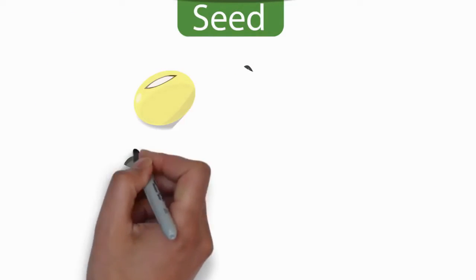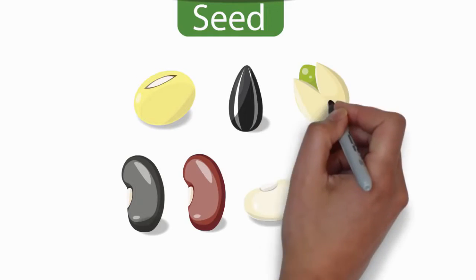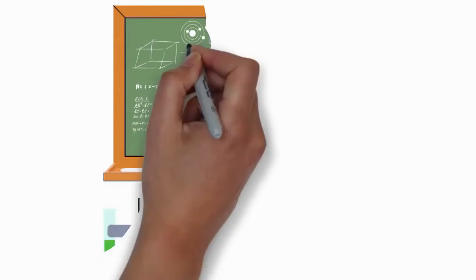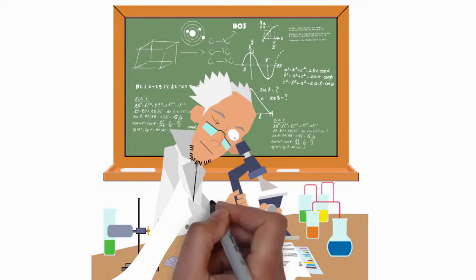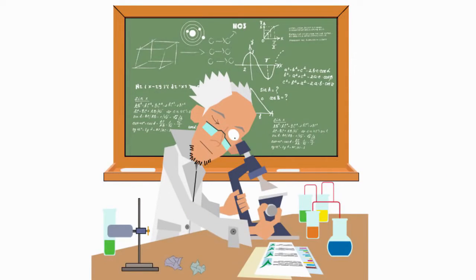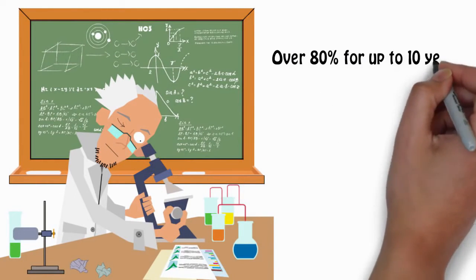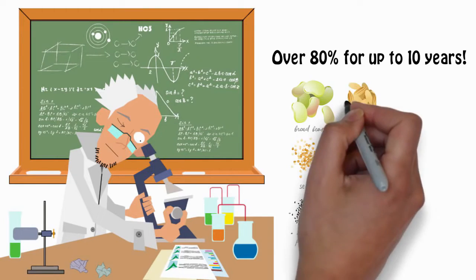The secret to storing seeds for many years is carefully drying the seeds to their ideal moisture level, which is different for each and every type of seed. Seeds that are scientifically dried to their exact ideal moisture level using highly specialized drying and testing equipment can still sprout with over 80% germination rates after being stored for up to 10 years.